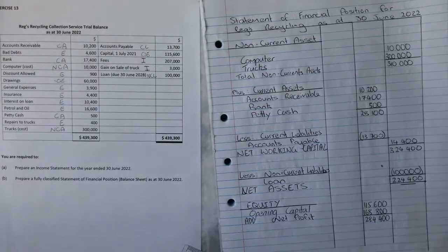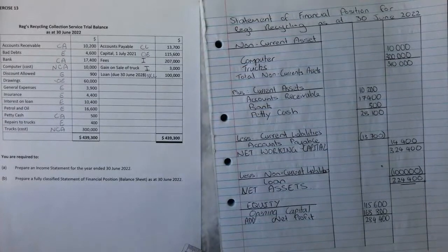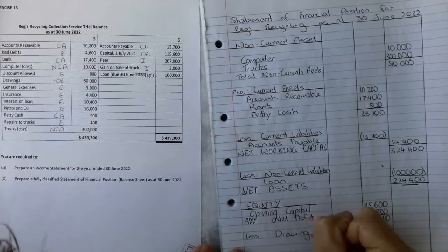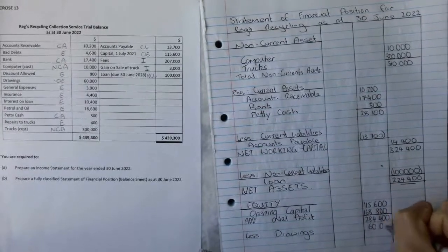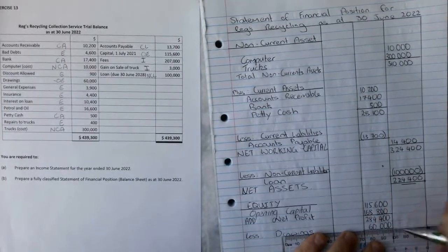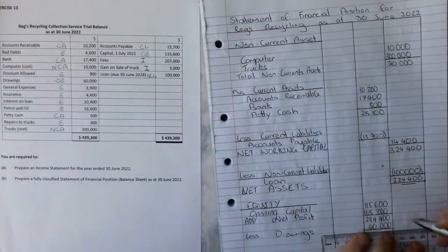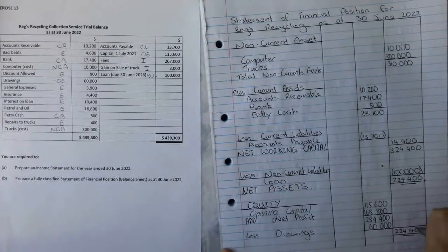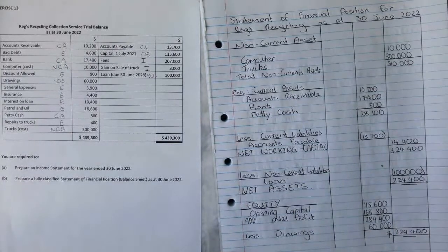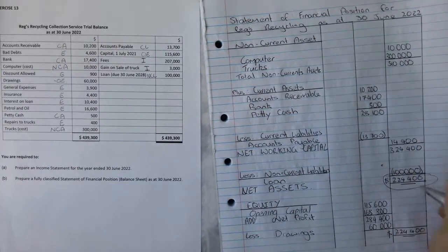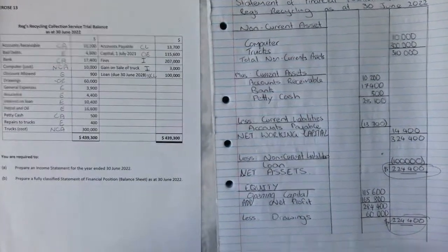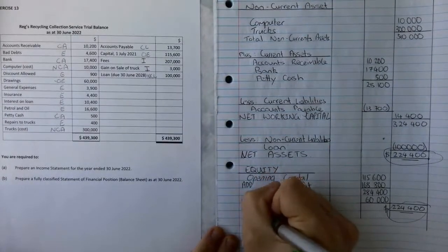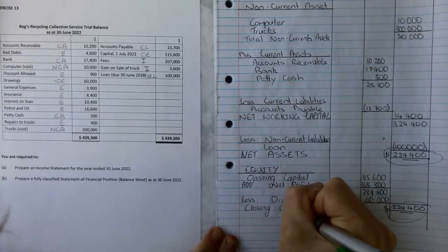Then we're going to minus our drawings. Less our drawings which is $60,000. That's going to come over here with our final total of $224,400. Put a dollar sign. As you can see, this figure here and this figure here are correct and that is why it's called a balance sheet. What we call that $224,400 at the moment at the bottom is closing capital.